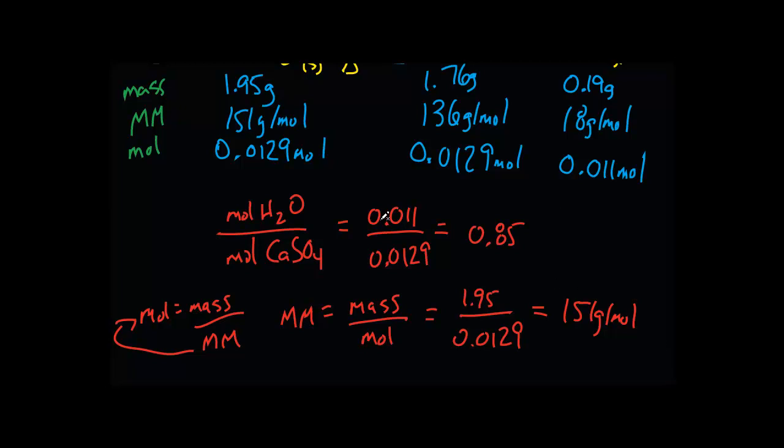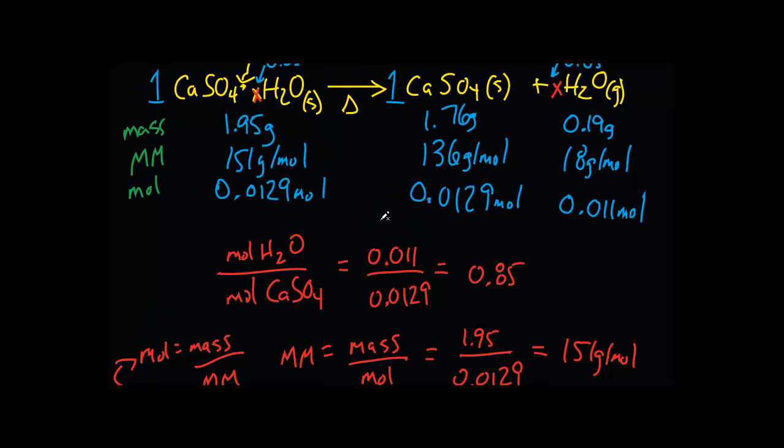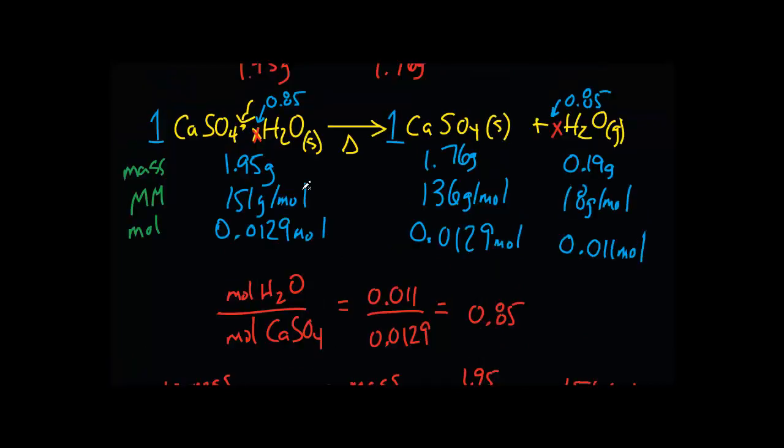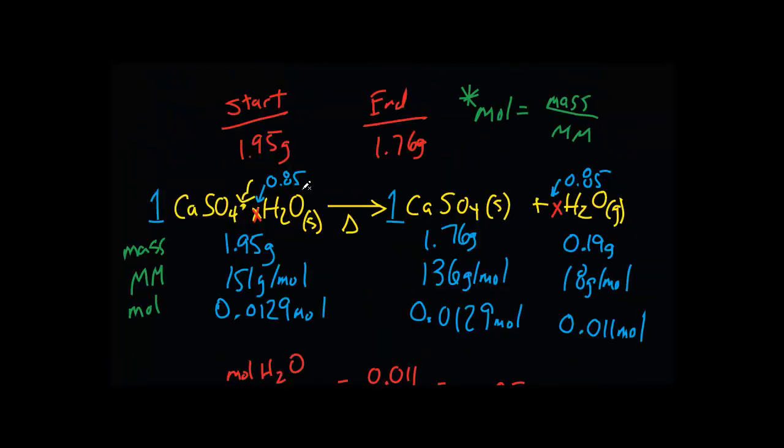Alternatively, you could have used the coefficient of 0.85 and multiplied it by 18 grams per mole, then just add it to the molar mass of the calcium sulfate. It should have gotten around the same mass. And that's how you complete a mass, molar mass, mole table, and that's how you determine the coefficient of that water with that limited information that we were given in the beginning.